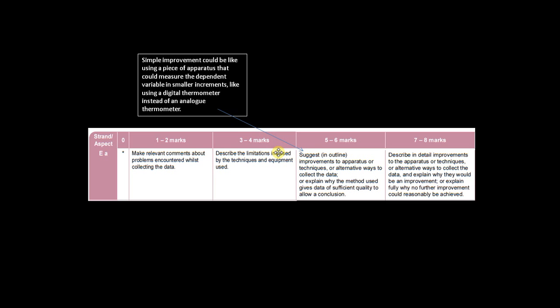Simply saying I could improve my experiment by doing more repeats is not worthy of any credit whatsoever. However, what would earn you credit is if you suggested changing a piece of apparatus to a more precise version. So if you replace a simple analog thermometer with a digital thermometer which can take measurements to the nearest 0.1 degree, that would be an improvement to your apparatus and would gain you credit.